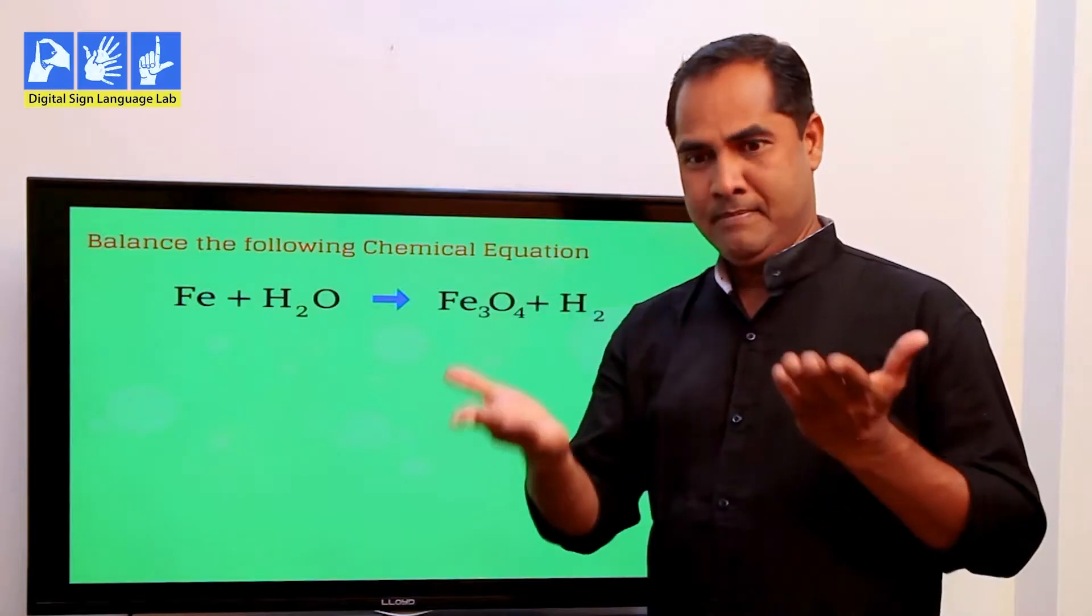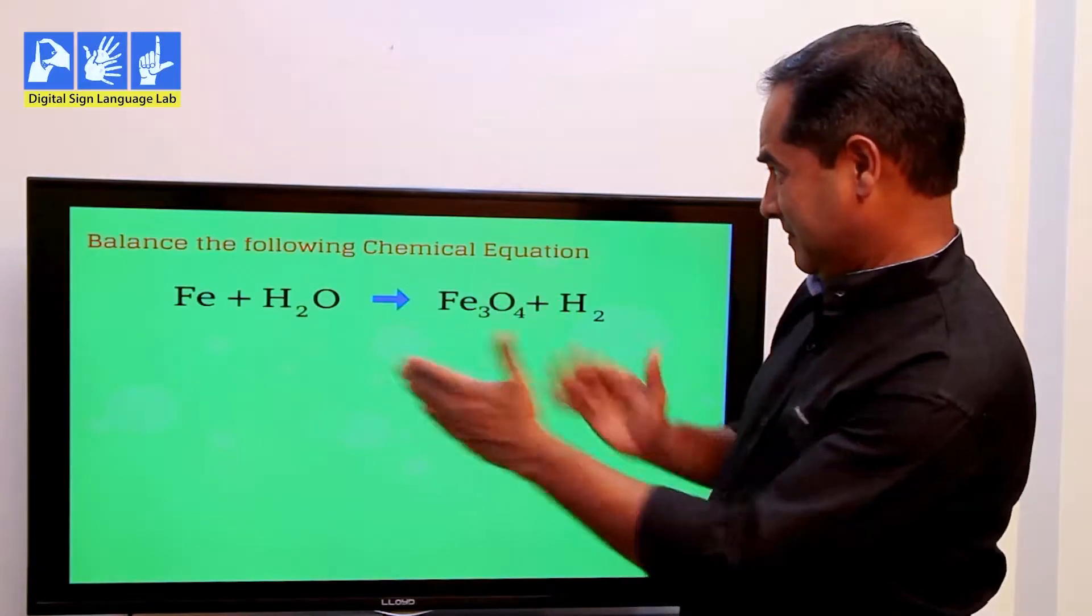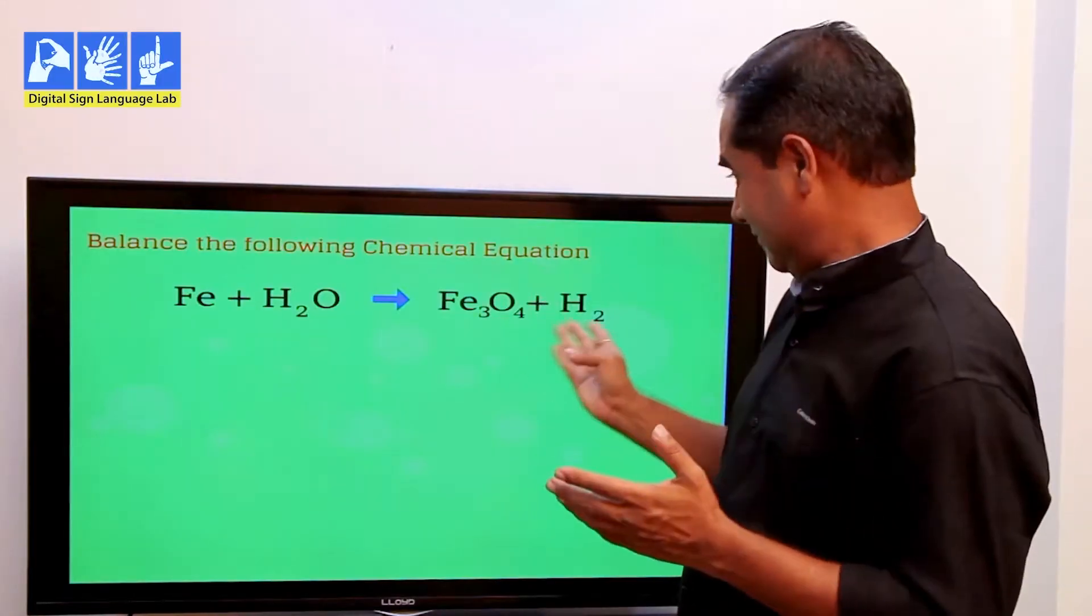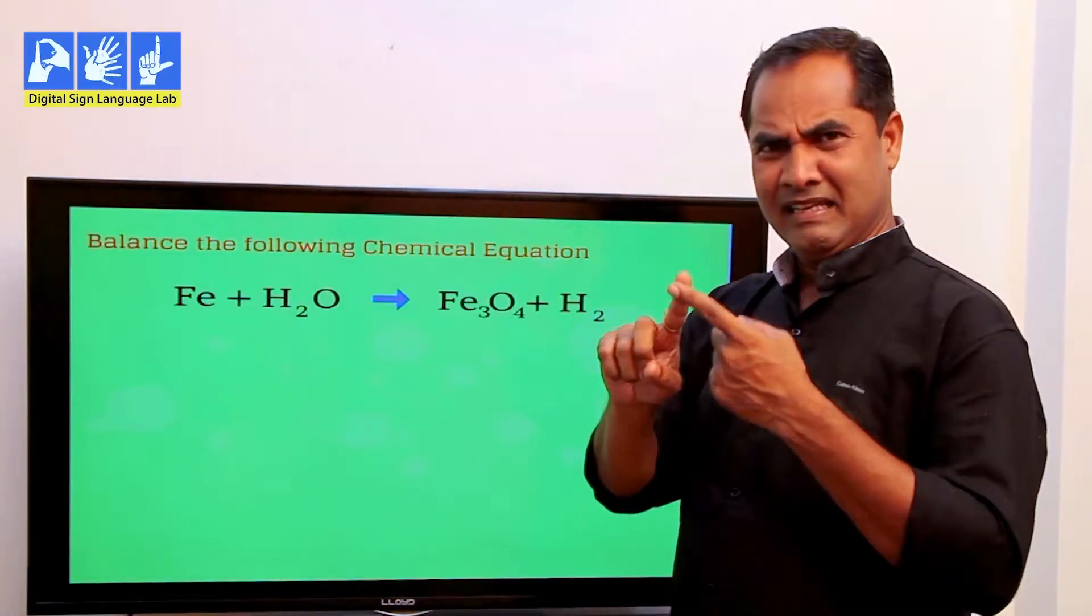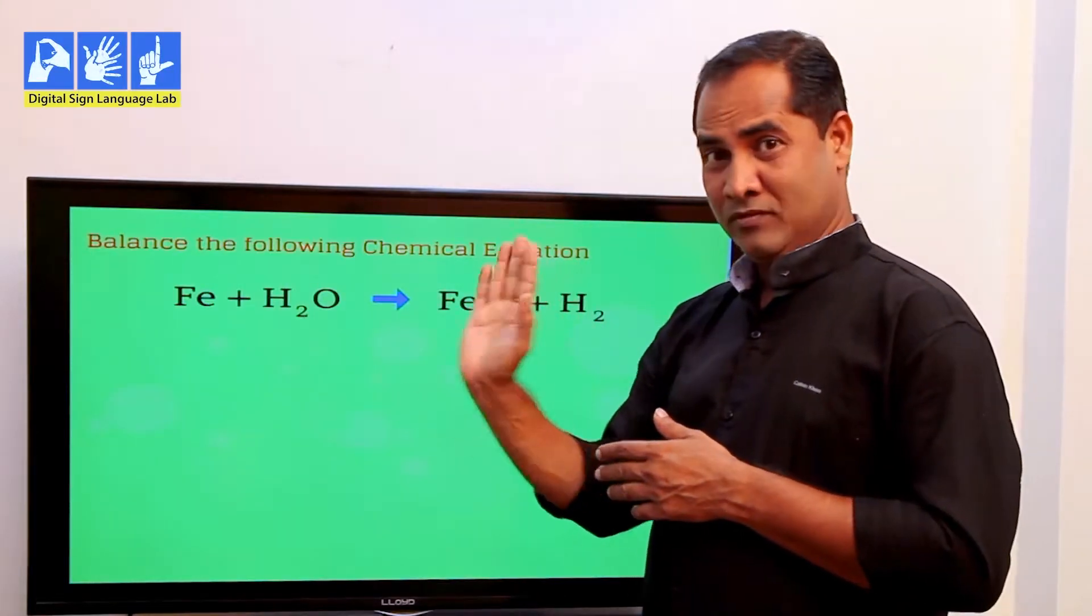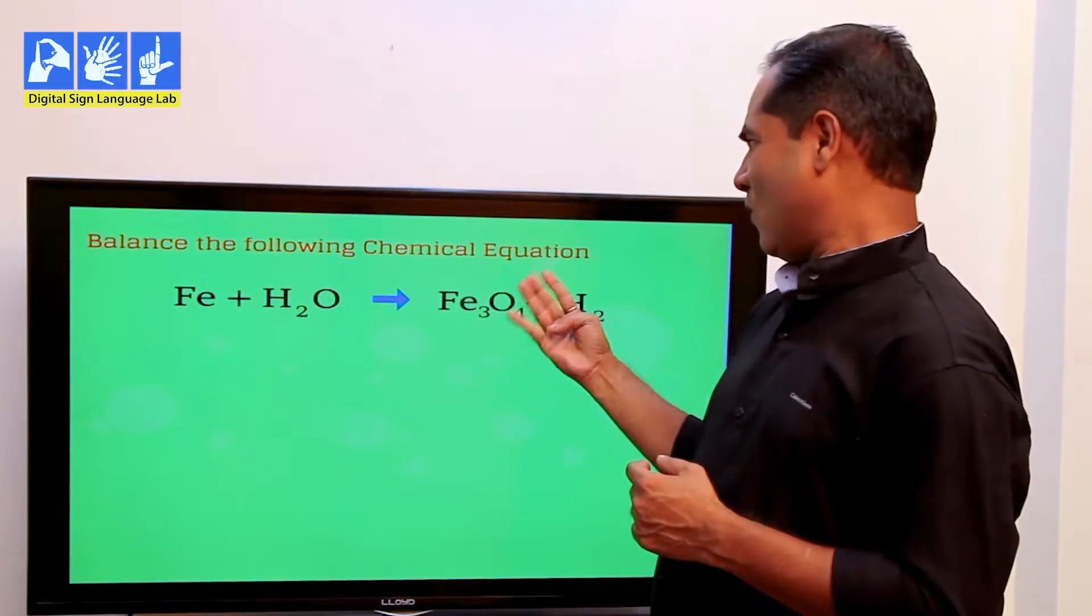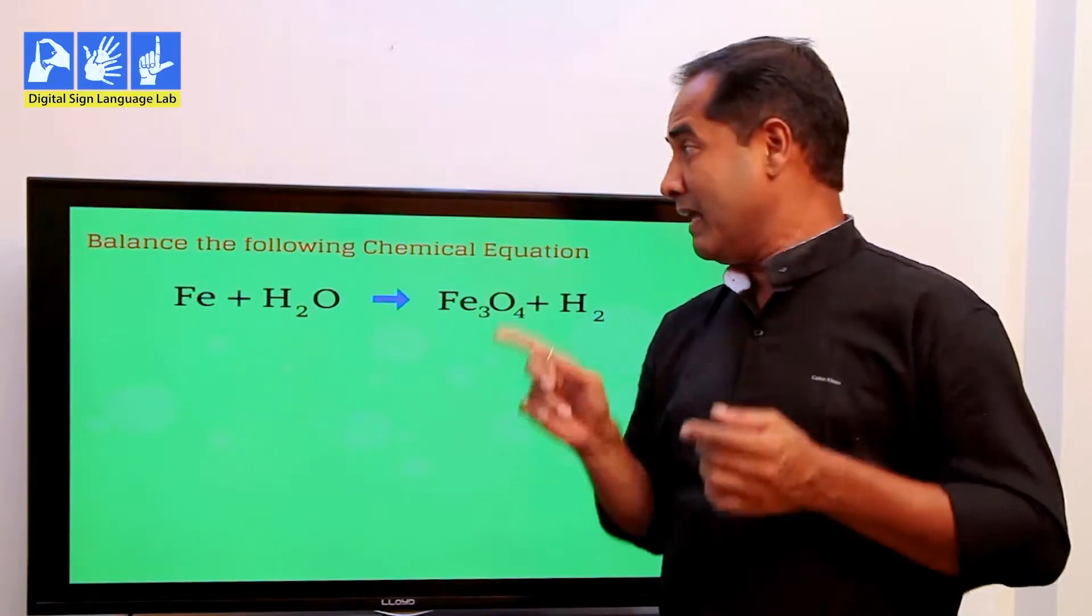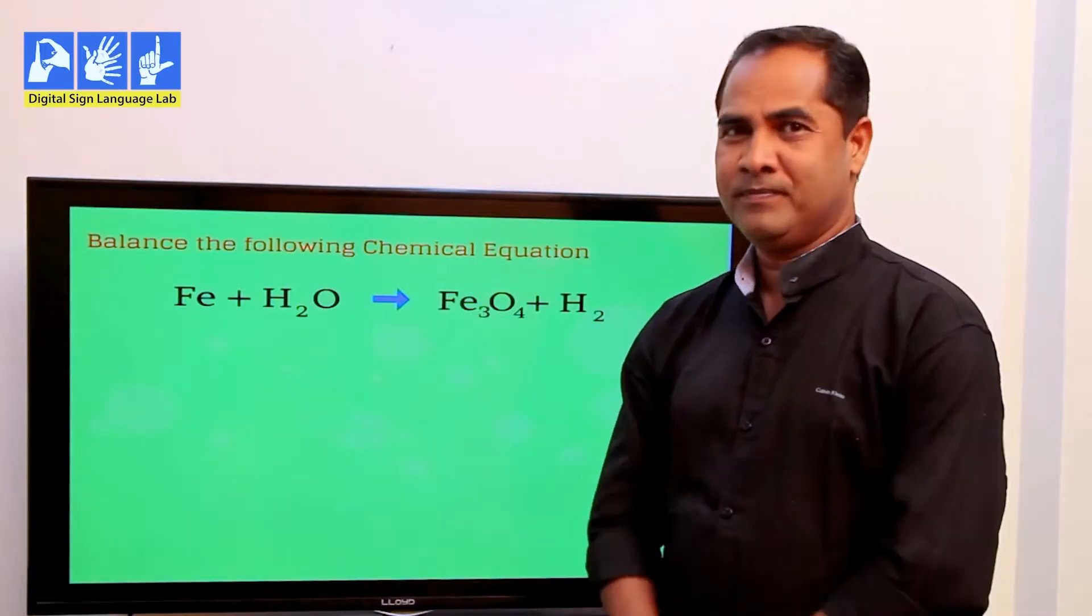I have already told you about the reactant and the product being balanced in a chemical equation. So we'll try to do that in this example. Let's see if it's already balanced or not. Fe which is iron, left-hand side we have one, on right-hand side we have three. H2O on left-hand side, we have only one and on right-hand side we have four. Hydrogen, I can see both are two, but somehow this equation is not balanced.